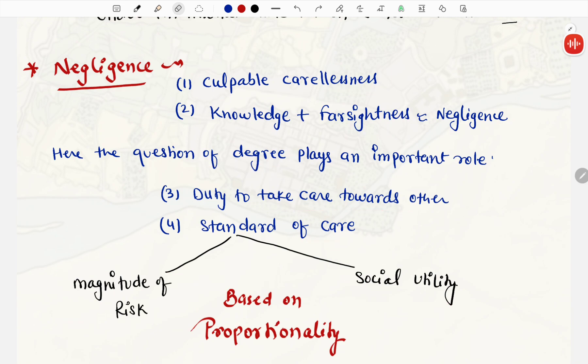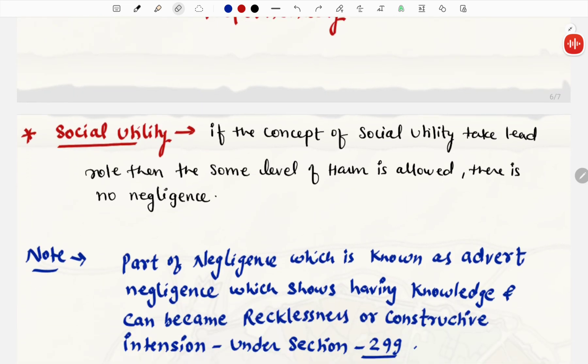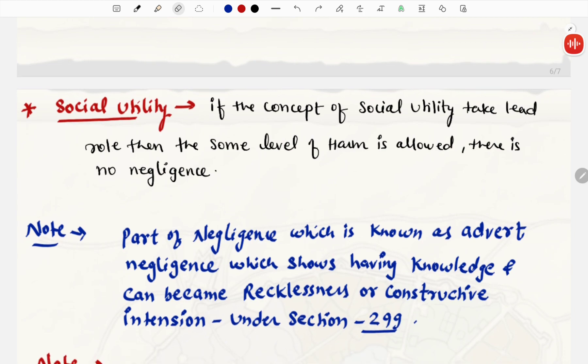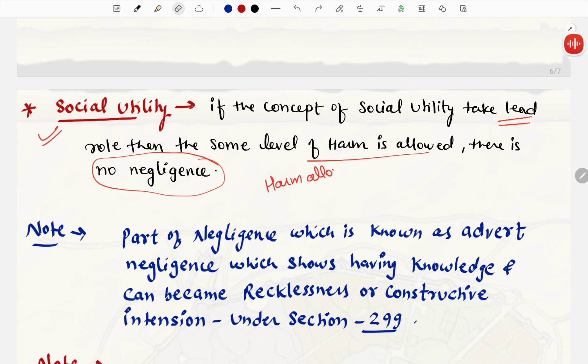Iske baad, ek aur concept aata hai, social utility. If the concept of social utility takes lead role, then some level of harm is allowed, there is no negligence. Agar social utility hai, jo pure samaj ko benefit de rhi hai, ya kisi society ko benefit de rhi hai, to waha par, agar thoda harm bhi kisi ko ho raha hai, to woh allow hoga, woh negligence ke andar nahi aayega.